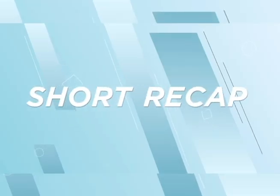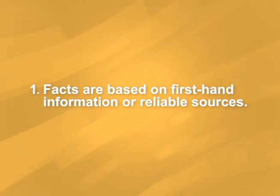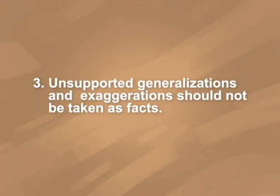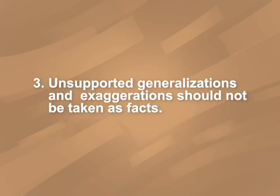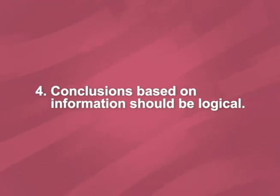Before we end this lesson, remember the following. Number one: facts are based on first-hand information or reliable sources. News reports are factual if they are not based on hearsay. Opinions may not have reliable information as support. Number two: analyze information to tell if it's true or not. You can do this through direct observation, reliable testimonies, or by studying if the information has enough logical support. Number three: unsupported generalizations and exaggerations should not be taken as facts. If something's too good or too horrible to be true, it probably is. Number four: conclusions based on information should be logical. You can get to logical conclusions by carefully analyzing the facts and verifying if they are indeed true by going to other reliable sources.